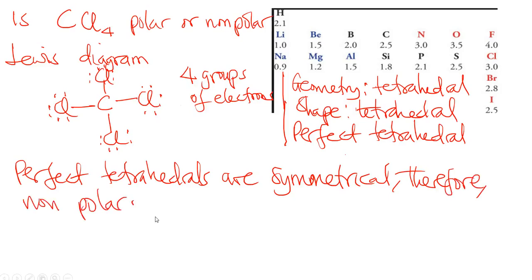If you see a perfect tetrahedron, you know it is a non-polar molecule. Now, another question: are the individual chemical bonds in CCl4 polar or non-polar? Note that this is different from asking whether the whole molecule is polar.